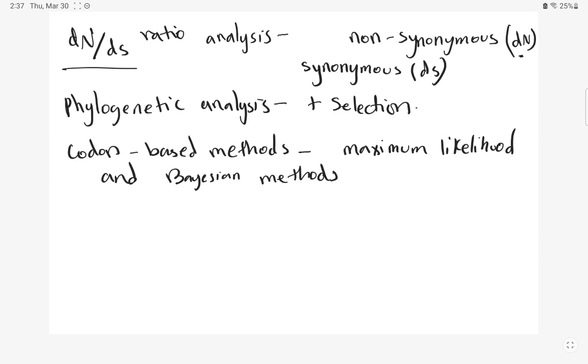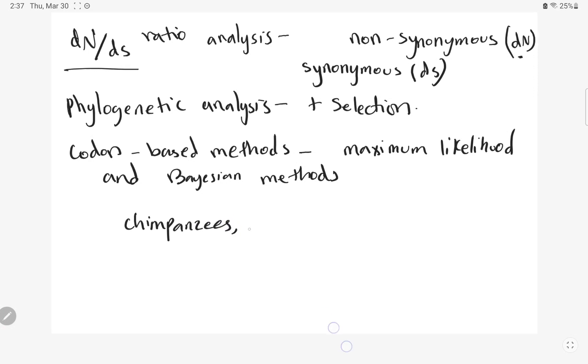To select the species for comparison to the human sequence, one could choose a species that is evolutionarily close to humans, such as chimpanzees, bonobos, or gorillas.